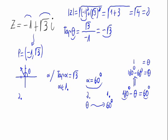So moving everything so that theta is alone, we get theta equals 180 degrees minus 60 degrees, which equals 120 degrees. So the angle theta is 120 degrees.